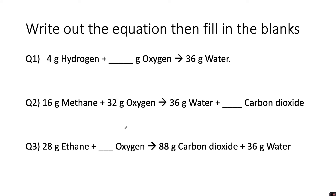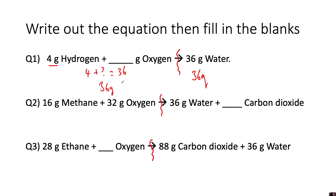Here are some for you to try. Write out the equation and fill in the blanks, using the wiggly line trick to separate left and right. Pause the video and have a go, then come back. For the first equation, you've got 36 grams on the right, so you need 36 grams total on the left. You have 4 grams already, so 36 minus 4 gives you 32 grams of oxygen.